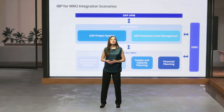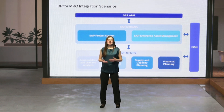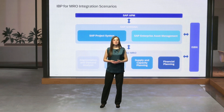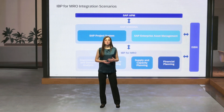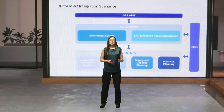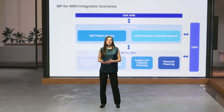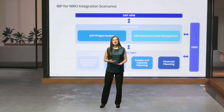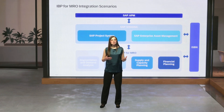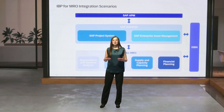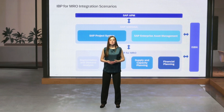There are also integration scenarios between SAP IBP and the SAP Business Network portfolio. For instance, the SAP Business Network for Supply Chain enhances planning processes by digitizing the supply chain, reducing information sharing latency, improving forecast accuracy, increasing visibility and enhancing better decision making.